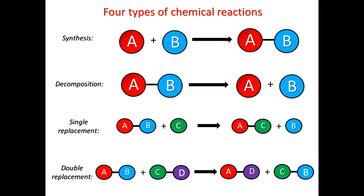Different types of chemical reactions — A and B are different atoms essentially. For synthesis, A and B react together to form AB, a new material. For decomposition, AB has gone backwards and decomposed into just atom A and atom B. If you've got AB and C comes along, C may replace B because AC may be a stronger bond — that's a single replacement. A double replacement is where you have an AB and a CD compound already, and they essentially just swap — A goes with D and C goes with B.